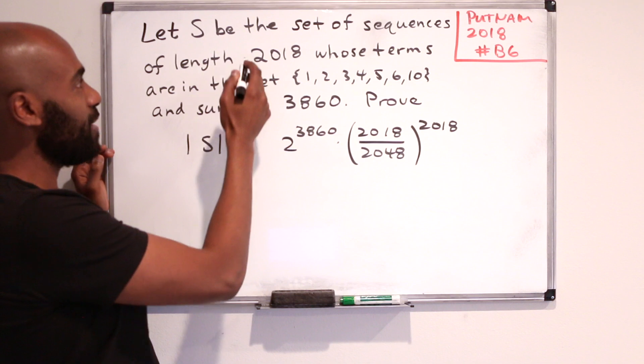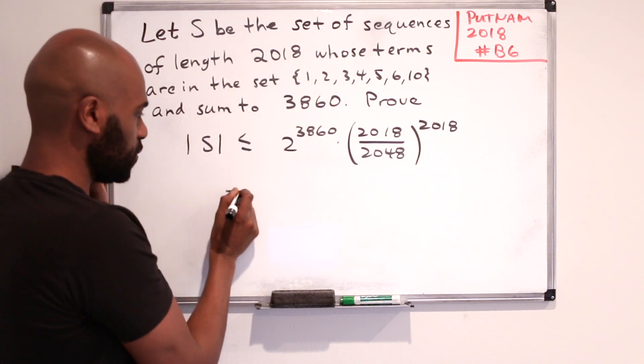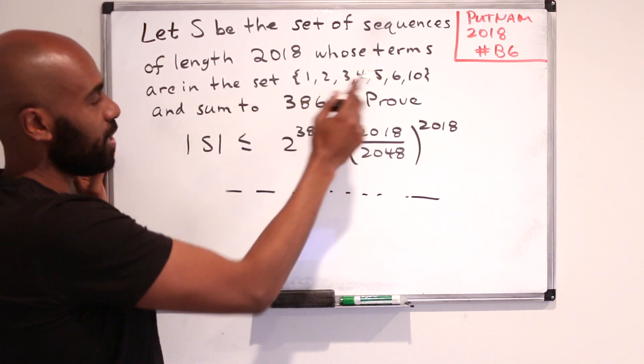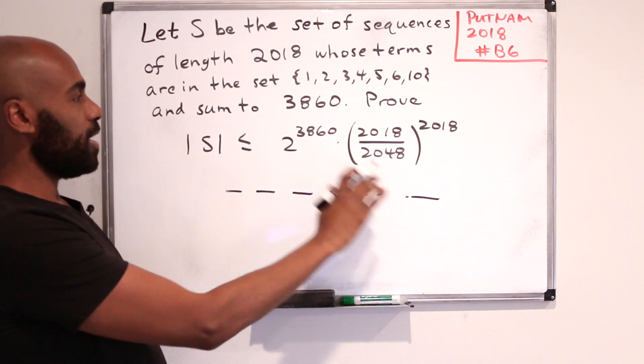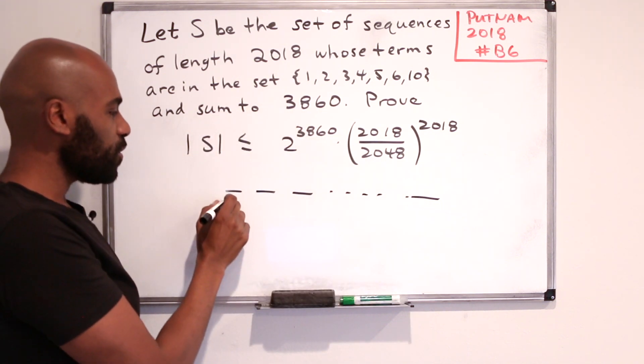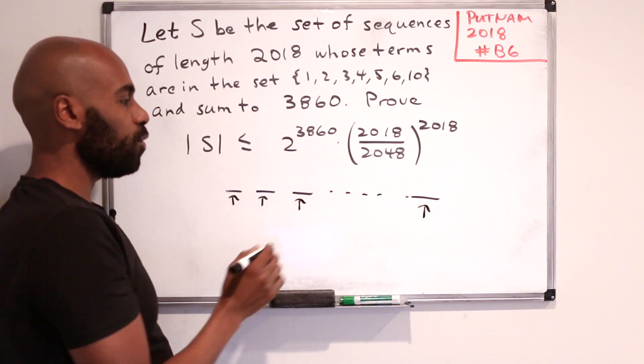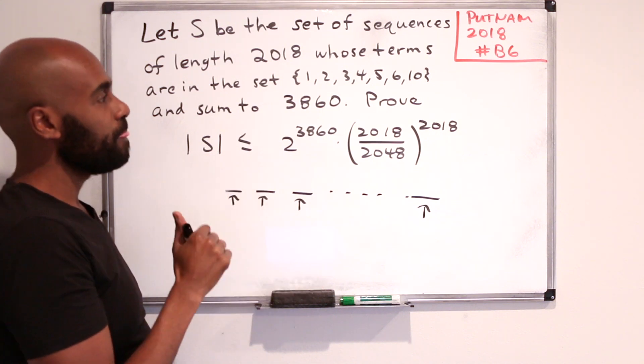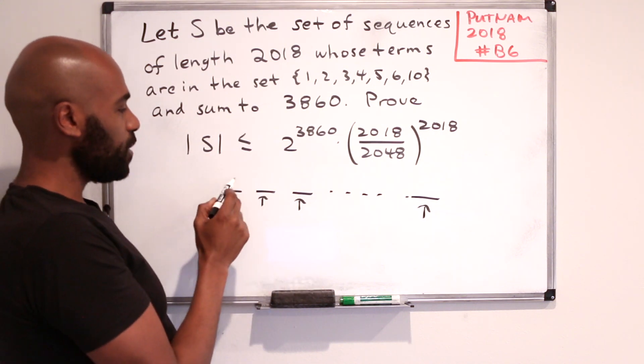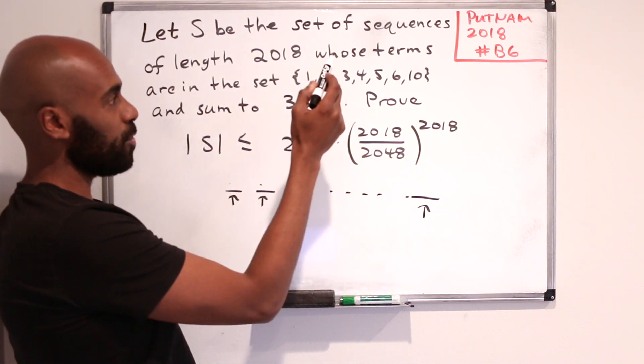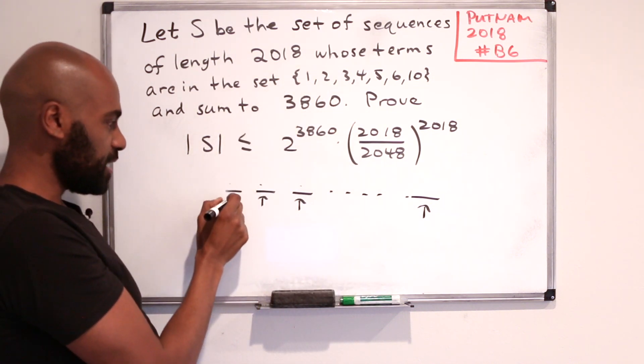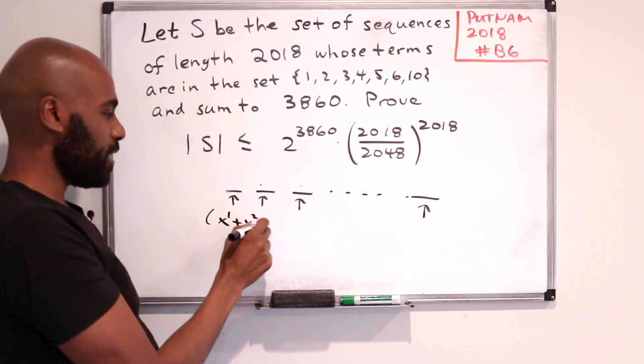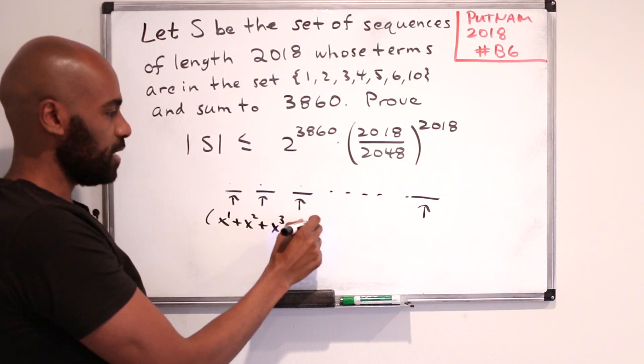A way to think about this is you have a sequence of 2018 things and in each slot you're selecting one of the numbers right over here and then you're adding them up to get this particular sum. So what you can do is associate to every single one of these components a series that's going to turn out to be a polynomial in the variable x that keeps track of what you place in here in the exponents. For example, for this slot we're picking one of these numbers right over here, so we're going to encode that by this polynomial right over here that has all of our choices in the exponents.